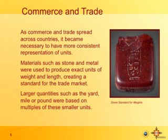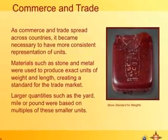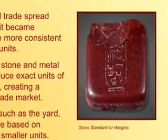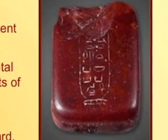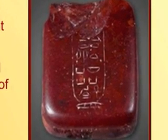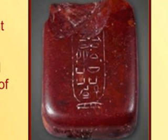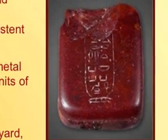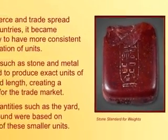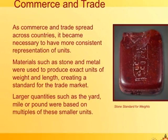As commerce and trade spread across different countries, it became necessary to be more consistent. If you're trading with a neighboring country, you want to speak the same language with respect to units so trade would be fair and equitable. Materials such as stone and metal were used to produce exact units of weight and length, creating a standard for the trade market. Much larger quantities such as the yard, mile, or pound were based on multiples of these smaller units.